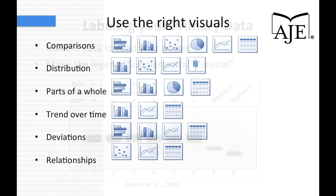Another issue is what type of graphic to use to report your data. Depending on what you wish to communicate, there are several standard visuals to choose from — bar graphs, scatter plots, pie charts, line graphs, or data tables when comparing one set of values with another. A different set of options may be more appropriate to show the distribution of values, how parts comprise a whole, trends over time, deviations from the norm, or how a group of values relates to one another. These all require different graphical representations.